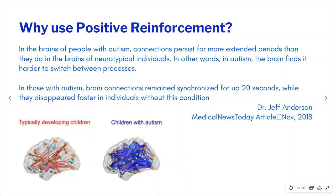In a typical classroom, there are so many noises and things happening around, and the teacher is teaching — switching between all these processes is not easy for these children. This does not mean they cannot be integrated into mainstream classrooms, but they need to be prepared for it first. Through ABA one-on-one teaching using positive reinforcement, shaping, and prompts, we teach the child certain skills so they can be prepared for integration into larger classroom settings. That's why positive reinforcement is very important for children with autism.